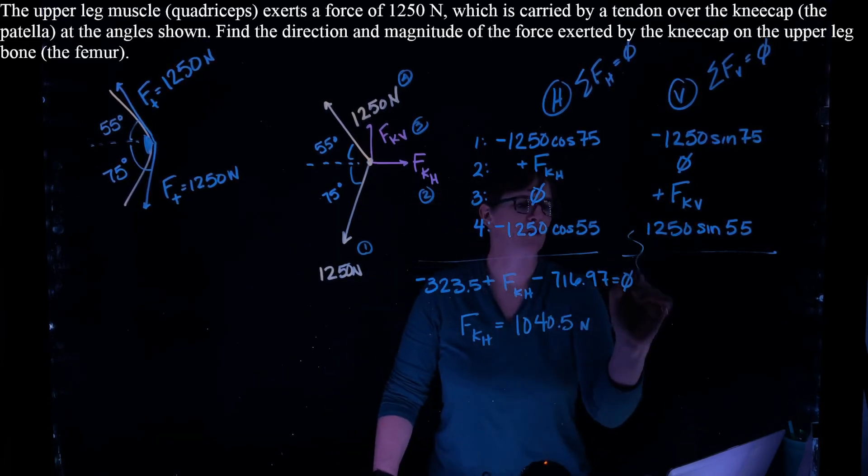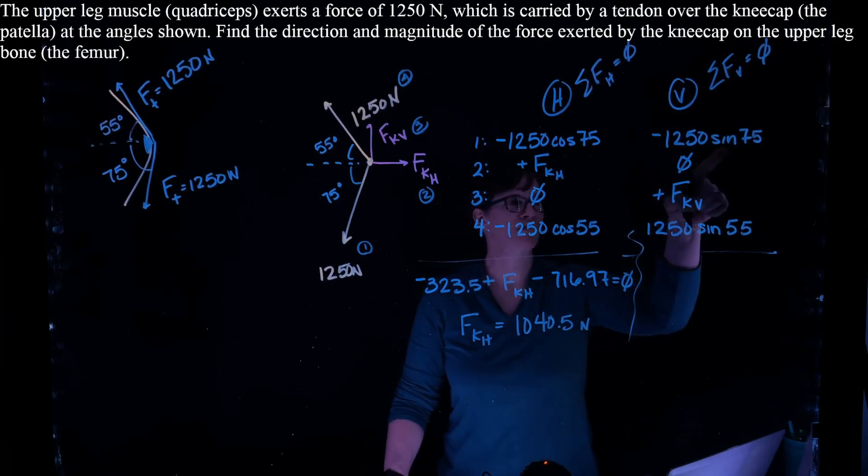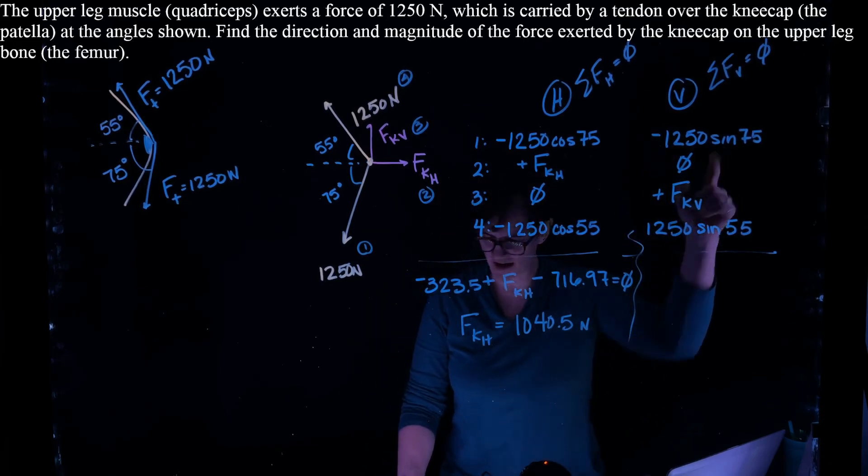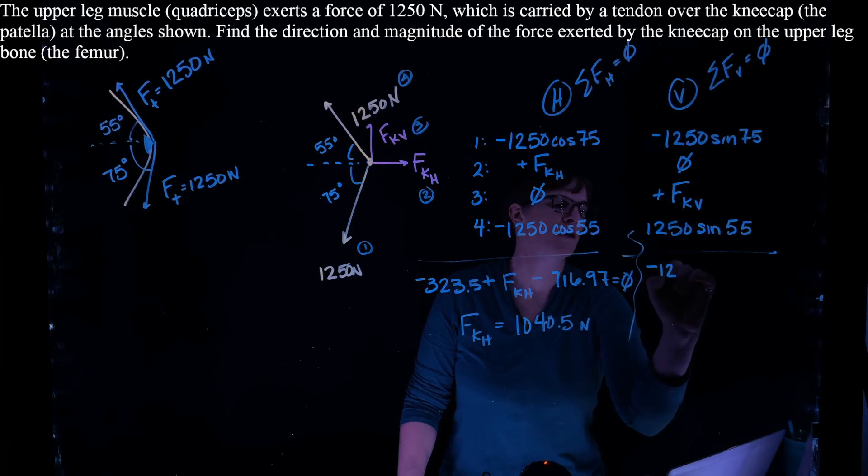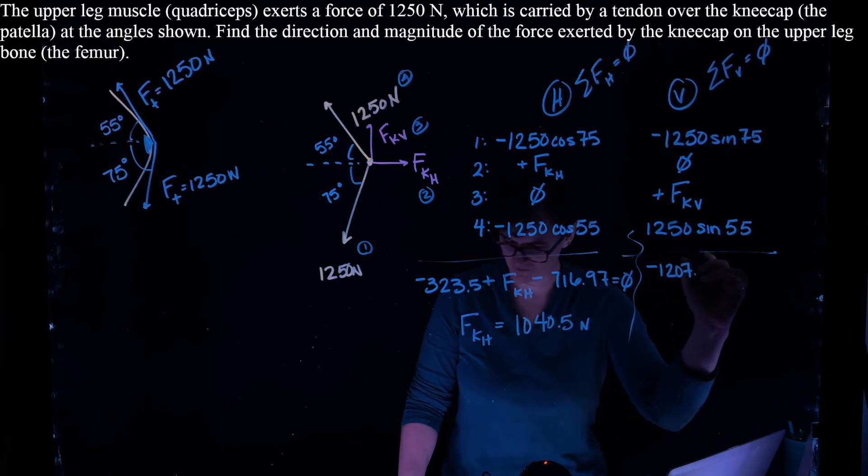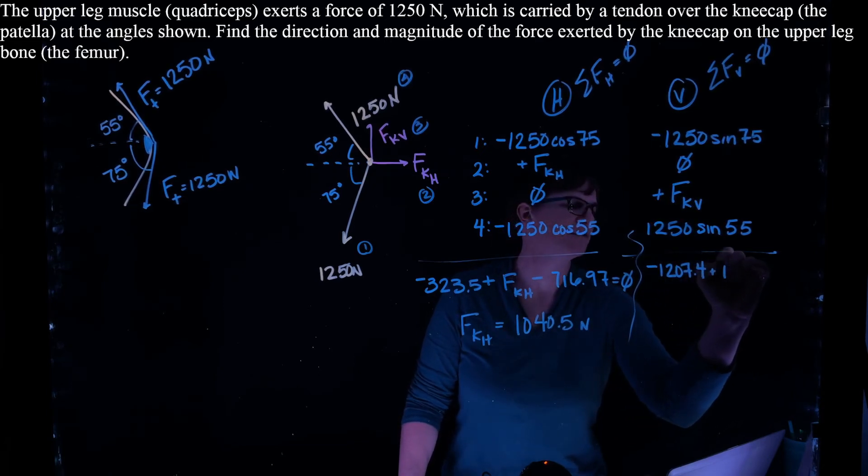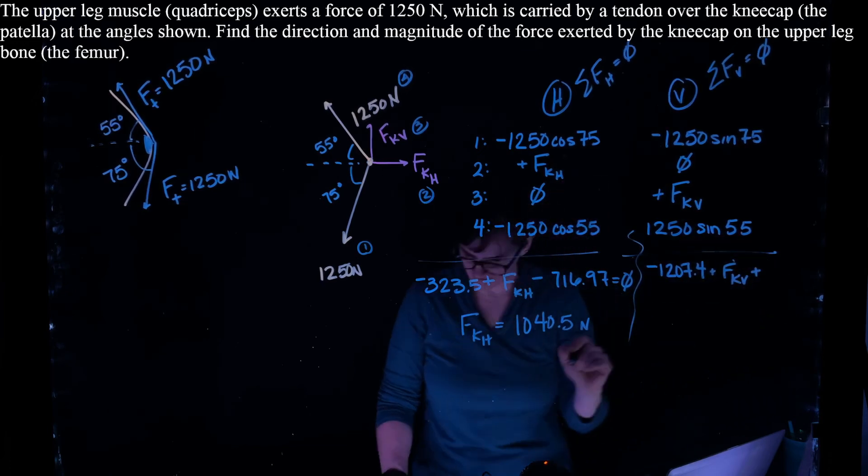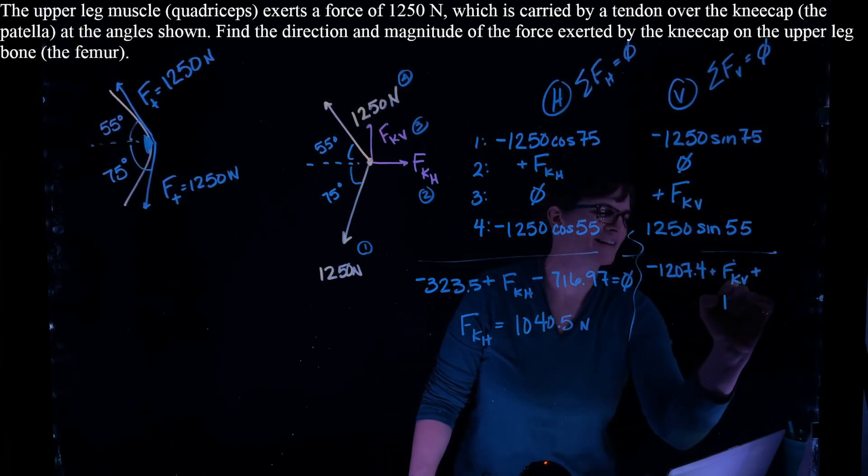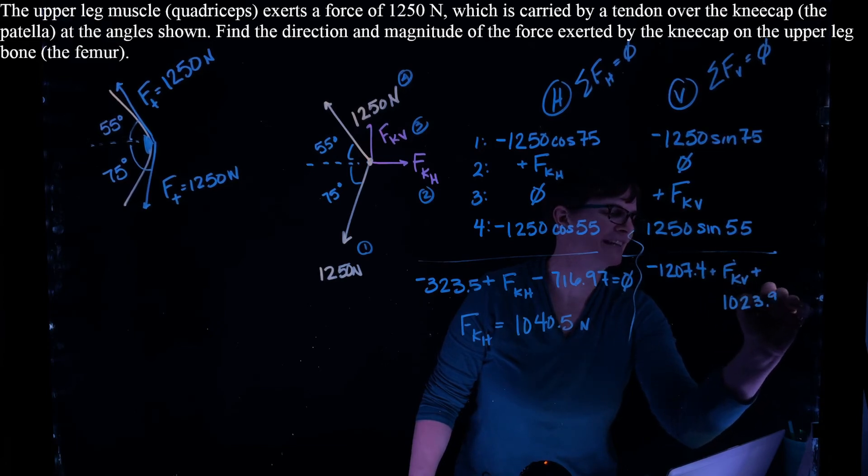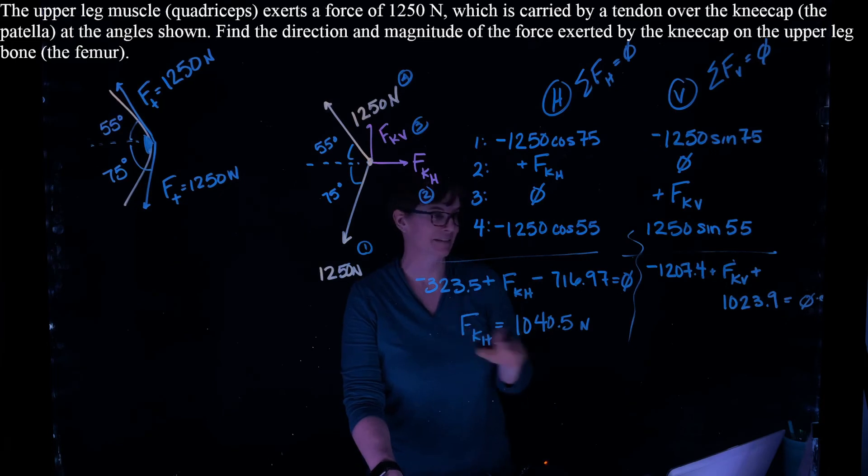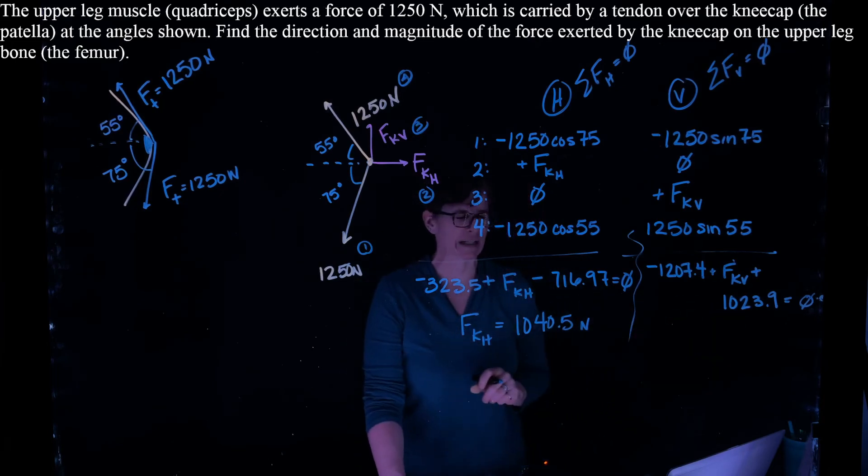Vertically, I have minus 1250 times the sine of 75. That's minus 1207.4 plus the force of the knee vertical plus, I'm going to have to go down to this bottom, 1023.9, and that is equal to 0. So 1250 times the sine of 55 is 1023.9.